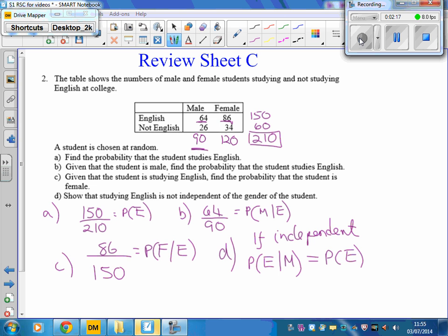And that probability of studying English given that they are male is actually 0.711, which is 64 over 90. And the probability that they study English is 0.714.